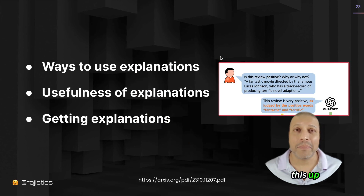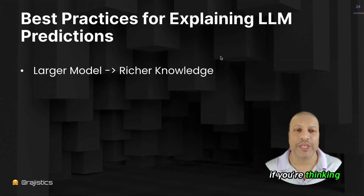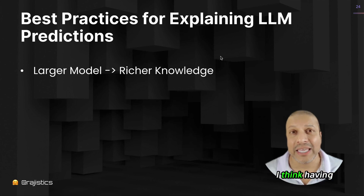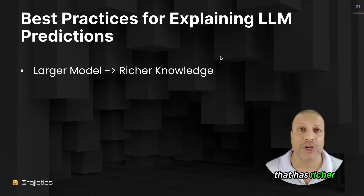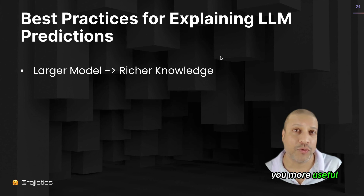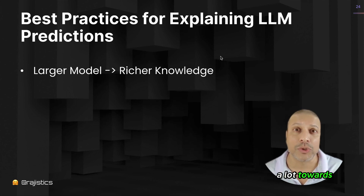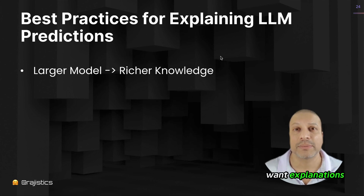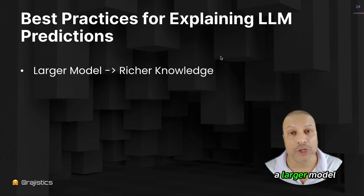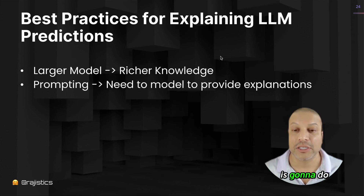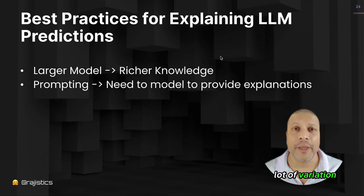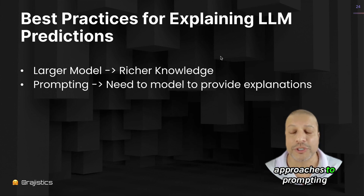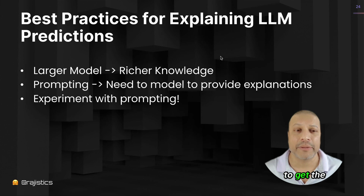So let's wrap this up. Here are some takeaways if you're thinking about using explanations. Having a larger model with richer knowledge is going to give you more useful explanations — this counters the folks often focused on using smaller models. If you want good explanations, a larger model, in my experience, is going to do better. Second is prompting: prompting has a lot of variation, and playing around with different approaches is going to be necessary to get the best explanations.